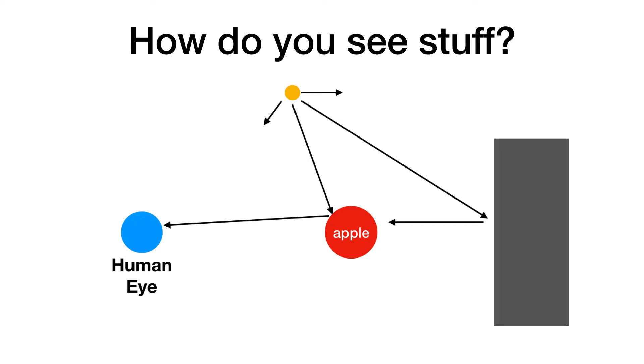Okay, now imagine I have no light. Then I couldn't see the apple, everything would be black. If I do not have that light reflecting off of the apple and getting into my eye, I can't see it. That's how we see things. It's not stuff coming out of our eyes. It's stuff going into our eyes.